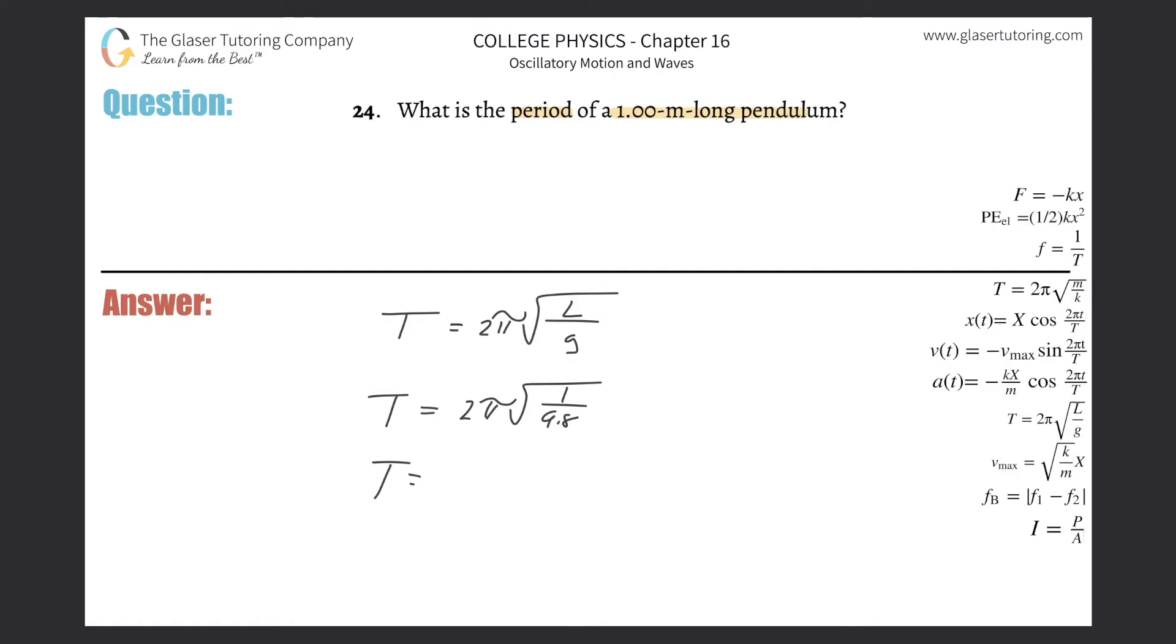And simply just plug that on into the calculator. This one is nice. I love problems like this, don't you? If only all of physics was this way. So 2 pi times the square root of 1 divided by 9.8,